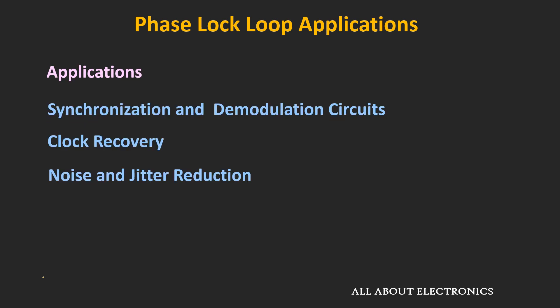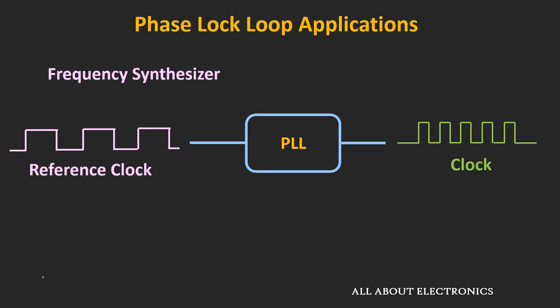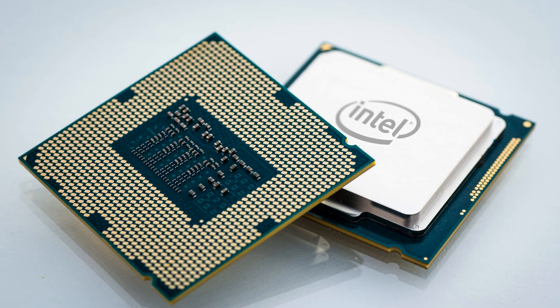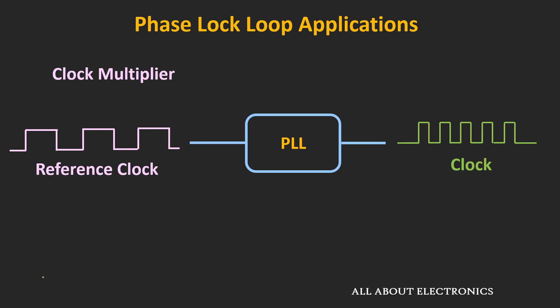One of the most common applications of the PLL is in frequency synthesizers as well as in tone generation. Using this phase locked loop, it is possible to generate an output frequency which is a multiple of the input frequency. And in microprocessors, they are used in the generation of a stable system clock.